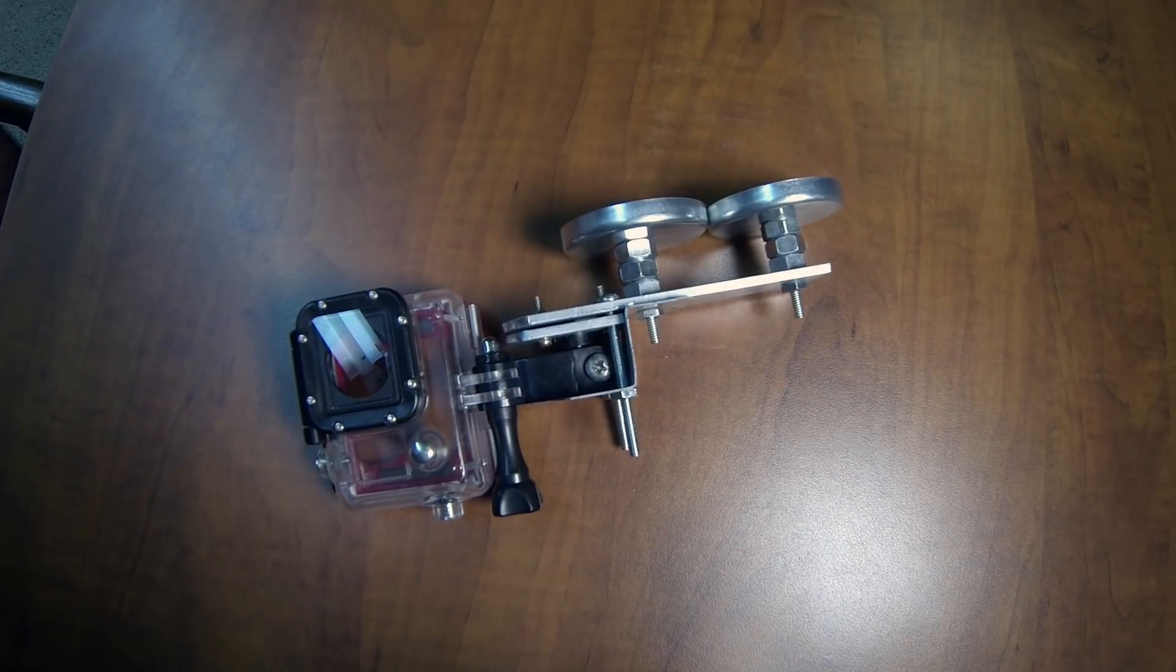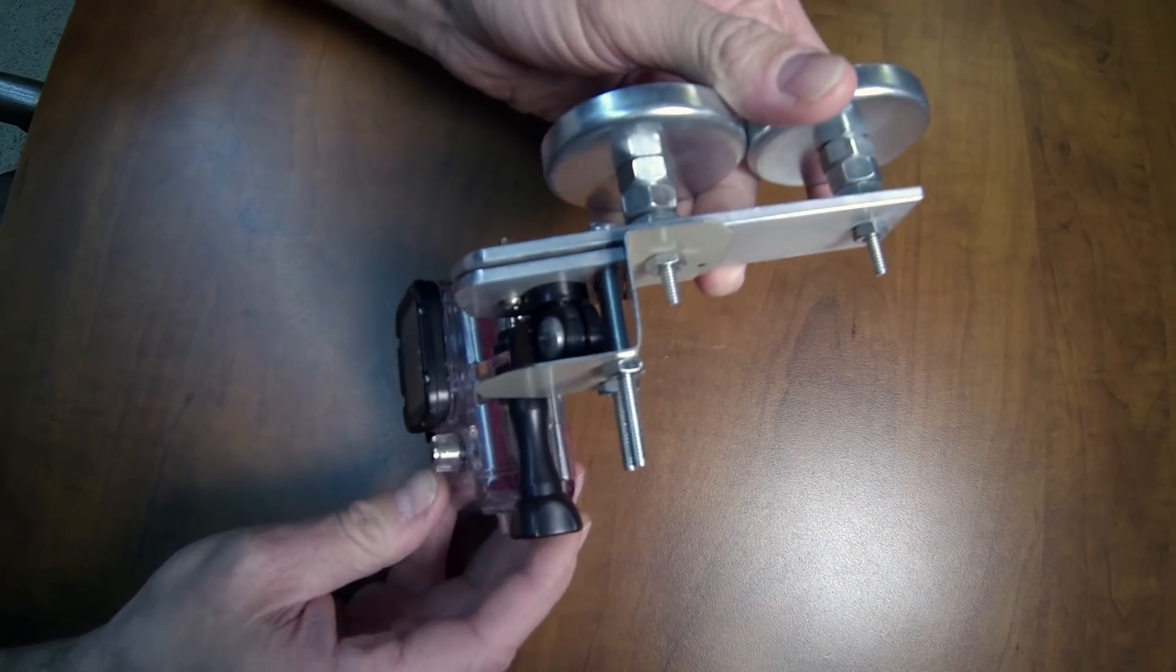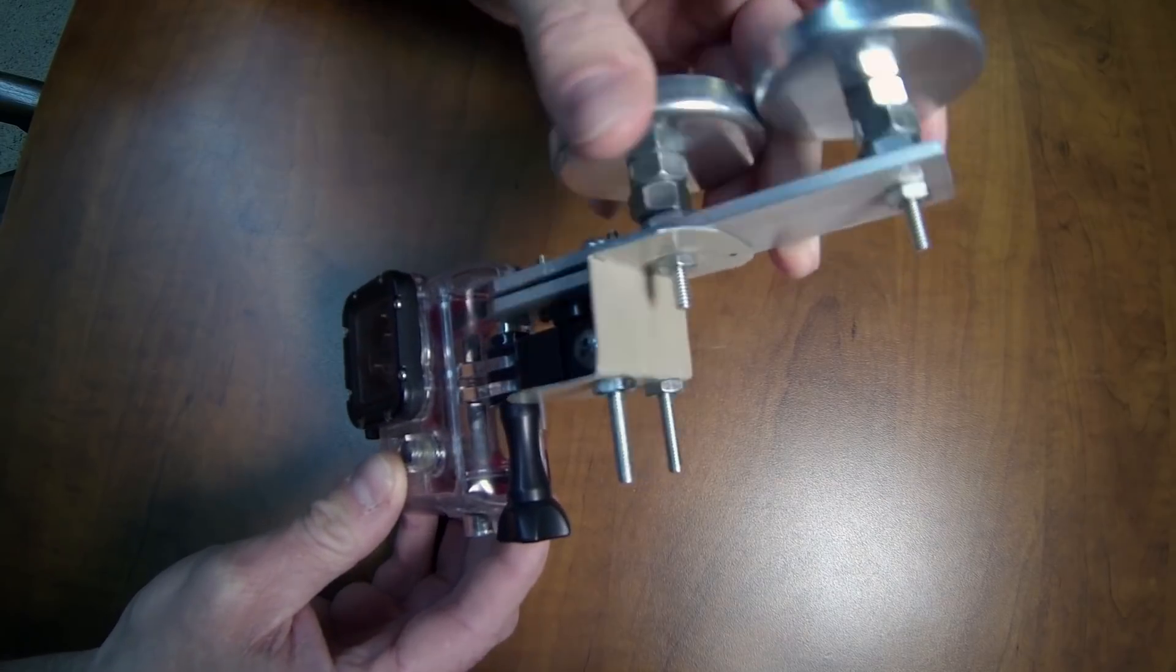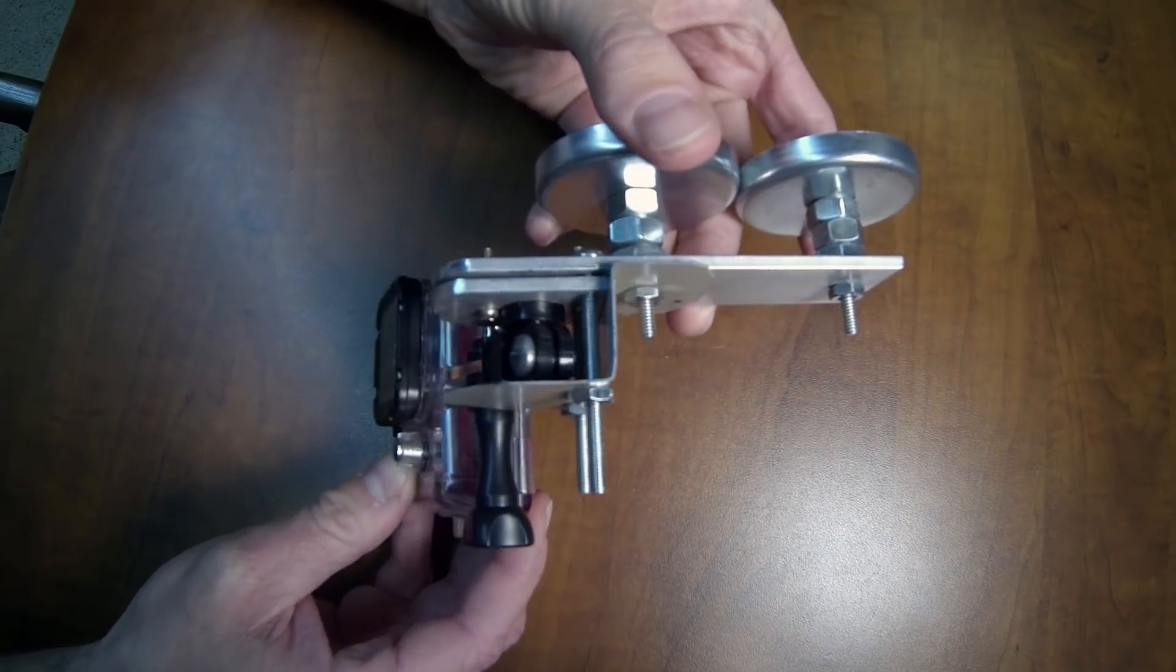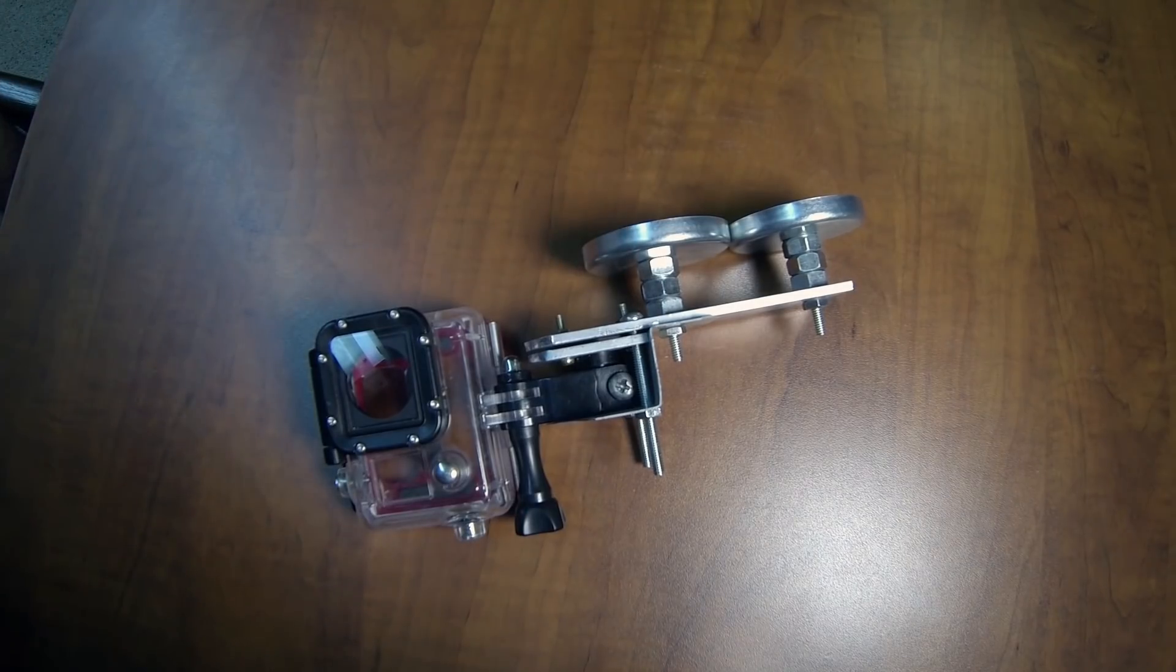The purpose of these self-leveling mounts is that they will keep the camera pointed at the horizon when the mounting base changes angle. I'll show you a little demonstration footage real quick here just to show you what I'm talking about.